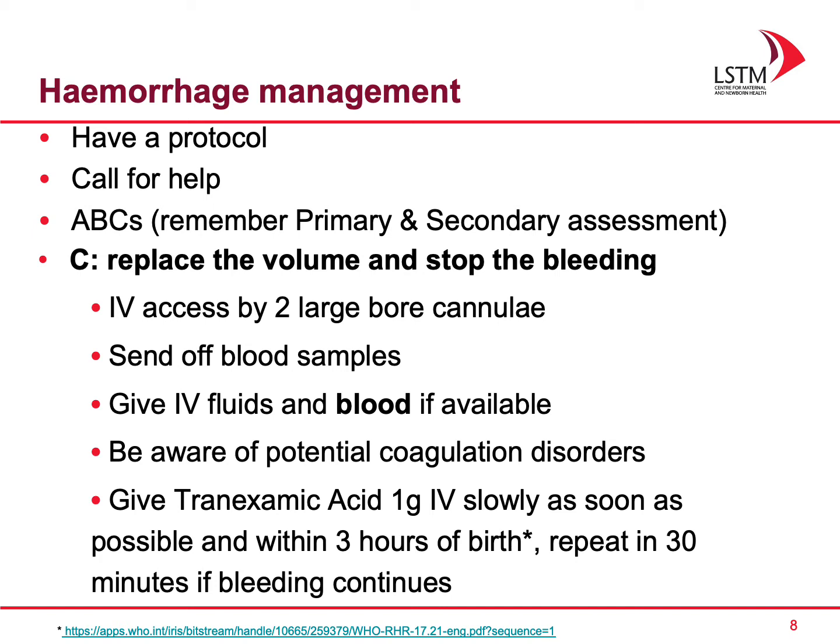The next thing you want to do is your ABCs. Remember, resuscitating these patients takes priority. Airway, breathing, and circulation — that is your primary survey — needs to be sorted out first. Then you move to your secondary survey, where you find out what the problem was: why was this patient bleeding, why was this patient in this state?